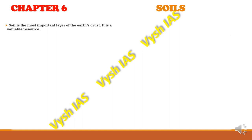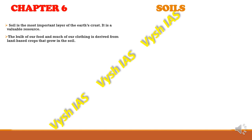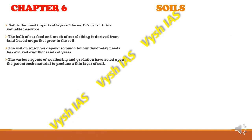Soil is a very important layer of the earth's crust — the topmost layer — and it is a very valuable resource. The bulk of our food and much of our clothing is derived from land-based crops that grow in the soils. For example, cotton which grows in the black soil is used for our cloth material. We depend a lot on soil for our day-to-day needs, and it has evolved over thousands of years. Various agents of weathering and gradation have acted upon the parent rock material to produce a thin layer of soil.